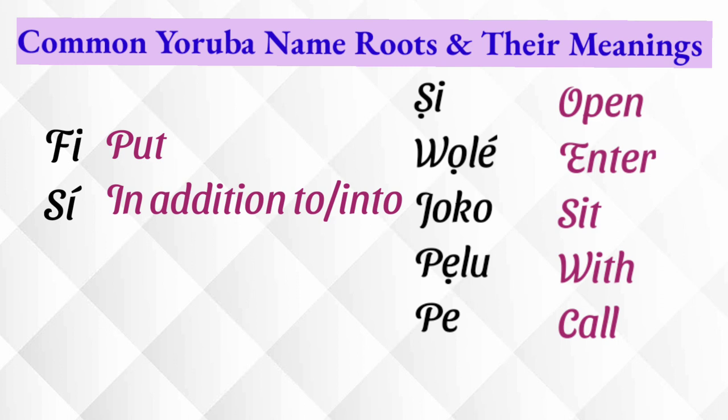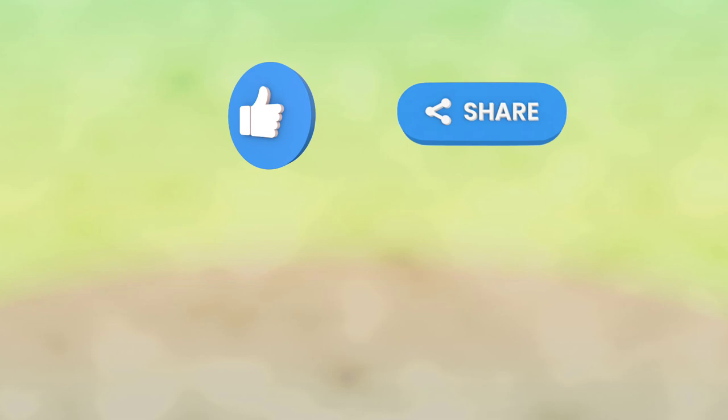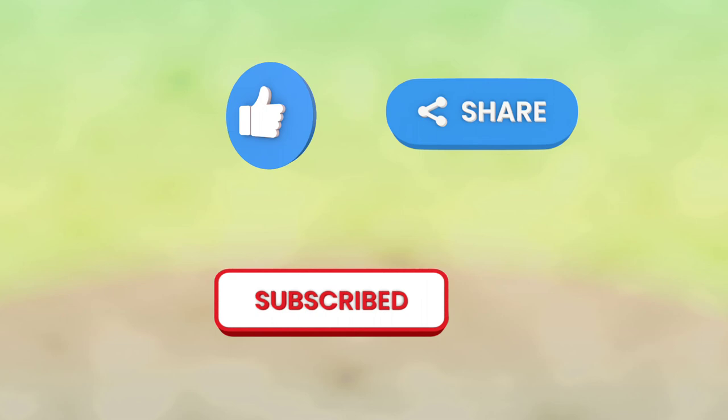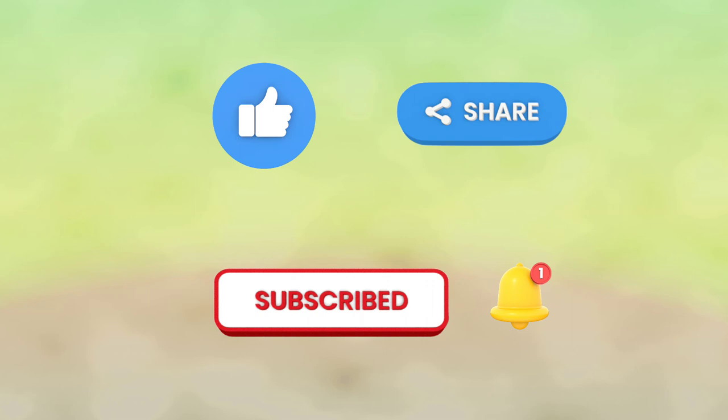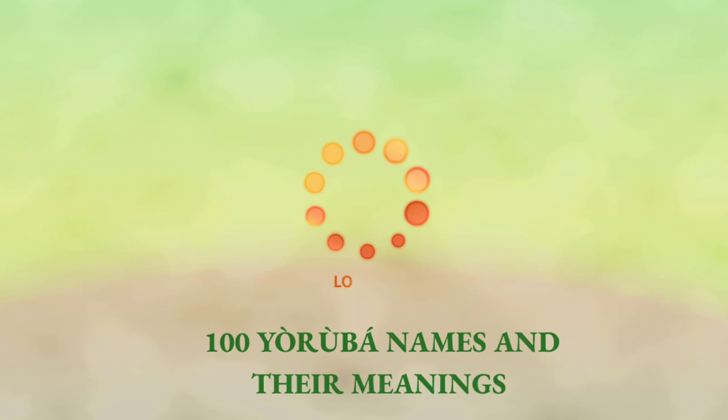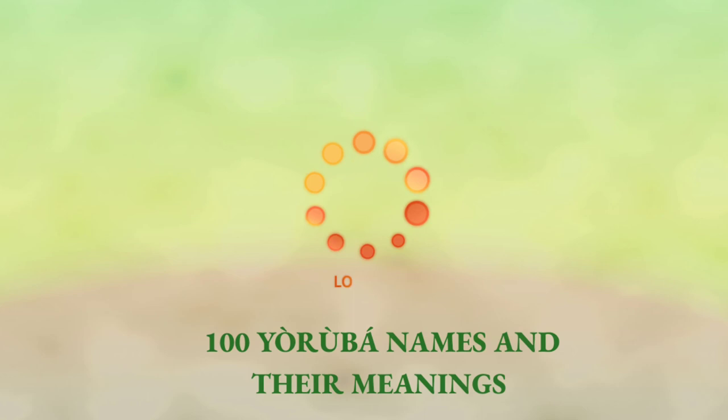So those are some Yoruba name roots — we'll be stopping here. If you think there are more we should explore, please drop them in the comment section. If you learned something new from this video, kindly like it and share it with your friends. Please subscribe to this channel and click on the notification bell so you're notified when a new video is posted. In subsequent videos, we'll be exploring more than 100 Yoruba names and their meanings. We'd love you to come on that ride with us. Thank you so much for watching. Goodbye. Odabo.